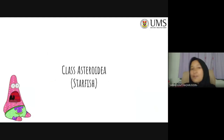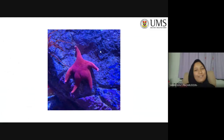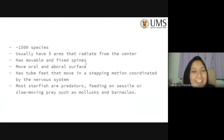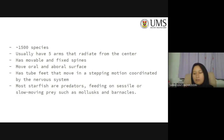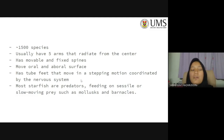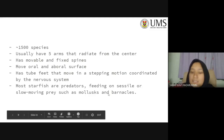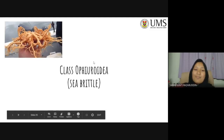First is class Asteroidea — the starfish. There are around 1,500 species, and they usually have five arms radiating from the center. They have movable and fixed spines, and they move on oral and aboral surfaces — typically found on flat ground, floors, or stuck to aquarium surfaces. Their tube feet move in stepping motions coordinated by the nervous system. Most starfishes are predators, feeding on sessile or slow-moving prey such as mollusks and barnacles.